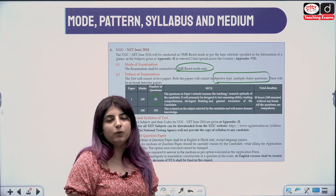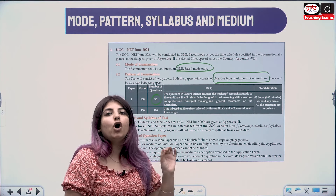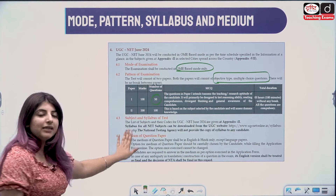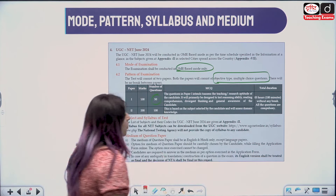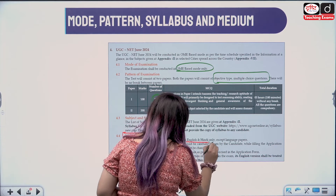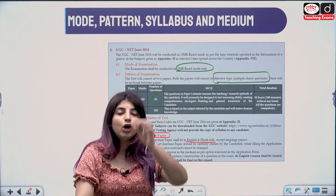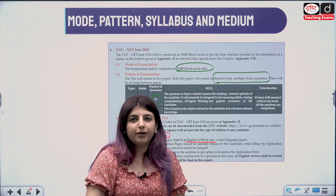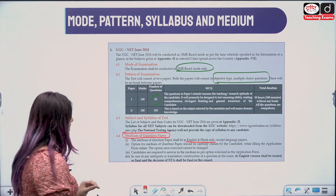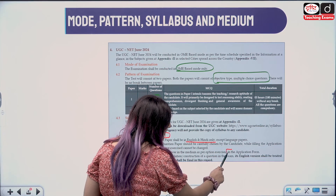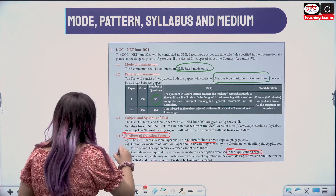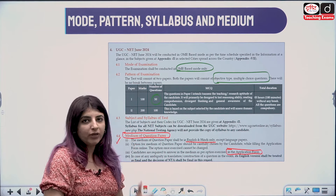For eligibility, you are supposed to obtain 55% marks in your Master's, without rounding off. You can download the syllabus from the website. The medium of the question paper will be a choice of English and Hindi, except for language papers. If you have chosen a language paper, that question paper will be available in that particular language. Make sure to fill your medium choice carefully in the application form.